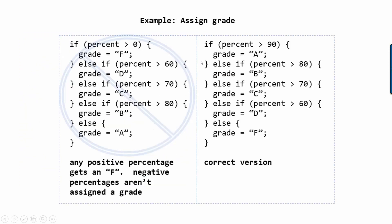Probably better though, would be to keep the else's and just reverse the ordering. So first you test if it's 90. And if it is, you give them an A and they're done. Otherwise, if it's not bigger than 90, then you check if it's bigger than 80, and so on.